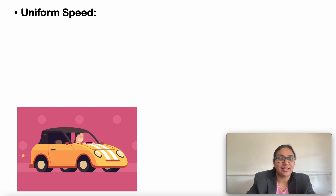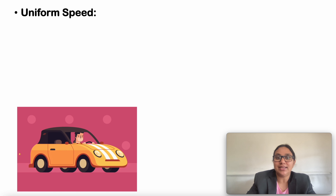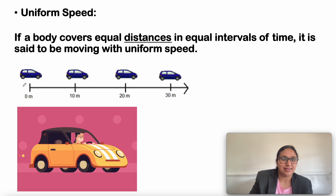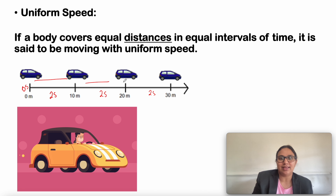What is uniform speed? If a body covers equal distance in equal intervals of time, then it is said to be moving with uniform speed. As you can see here, at 0 seconds the car has not moved yet, at 2 seconds it has reached 10 meters, next 2 seconds it has traveled 20 meters, next 2 seconds it has traveled 30 meters. The car covers equal distance in equal intervals of time, so it is said to be moving with uniform speed.